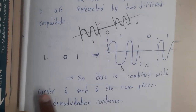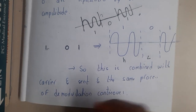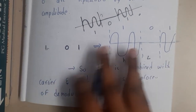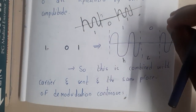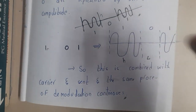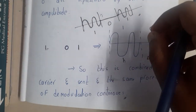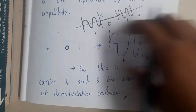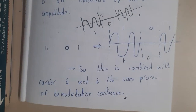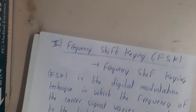This signal is combined with the carrier signal and sent. The same process of demodulation is also done. Basically, this signal is combined with the carrier signal and passed to the modulator, which generates the final signal. It is sent to the receiver, the receiver demodulates it with the help of the carrier signal, and finds the binary value by doing the process in reverse. That is how Amplitude Shift Keying works.